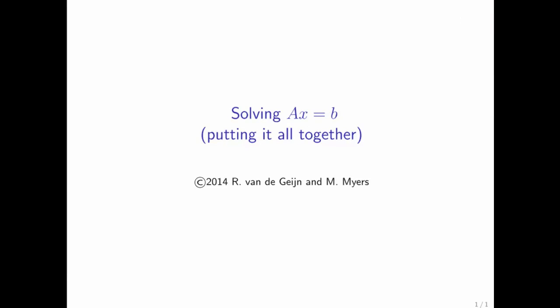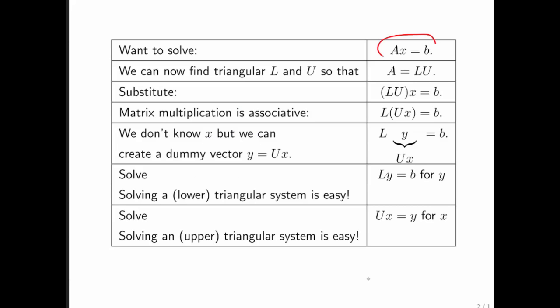So let's very quickly review how this all fits together. We want to solve Ax equals b. We factor A into L times U. We then substitute in L times U into the equation.